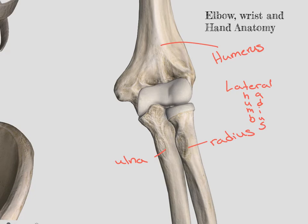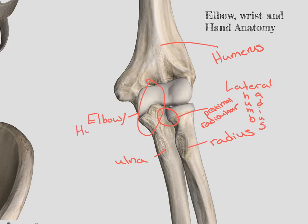When we talk about the joints, we have right here between the radius and the ulna, we have our proximal radial ulnar joint. Between the humerus and the ulna, we have the humeral ulnar joint, or the elbow joint. And then between the humerus and the radius, we have the radiohumeral joint.